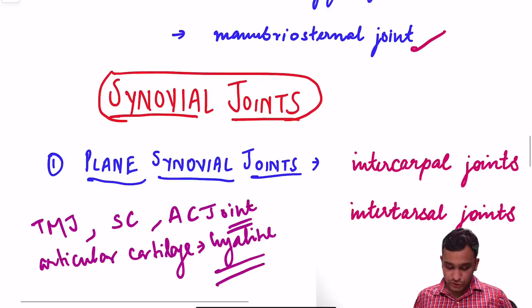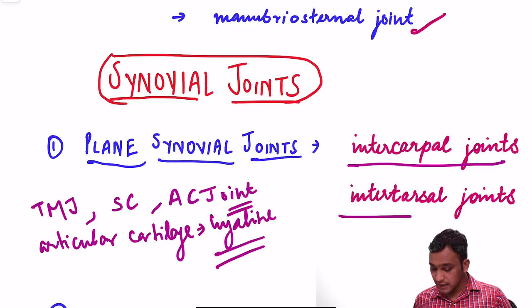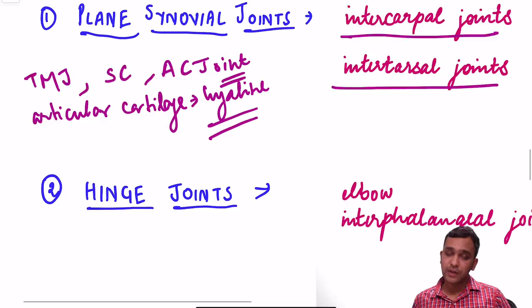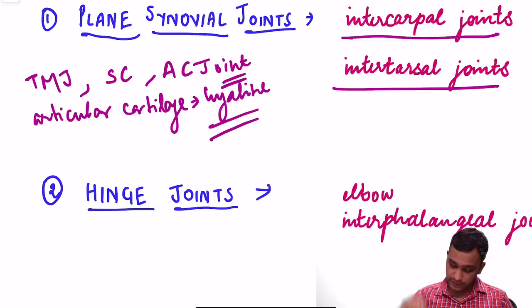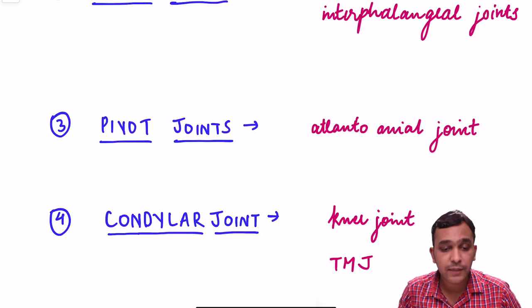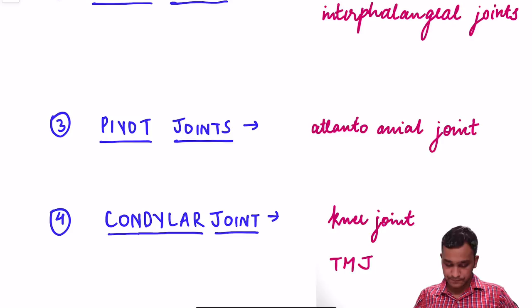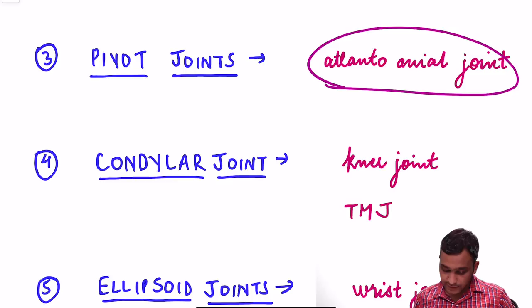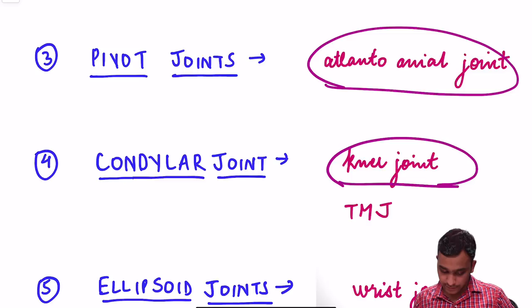Plane and oval joints — examples: intercarpal joints and intertarsal joints. Hinge joints permit movement only in one plane; examples are the elbow joint and interphalangeal joint. Pivot joints — example: the atlanto-axial joint, which permits rotational movement. Condylar joints — examples are the knee joint and the temporomandibular joint, which is a type of condylar joint.